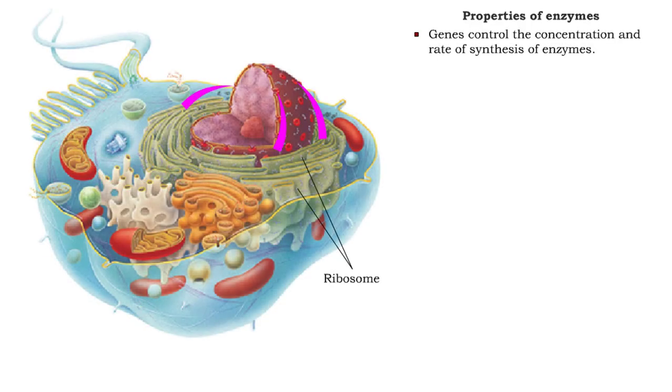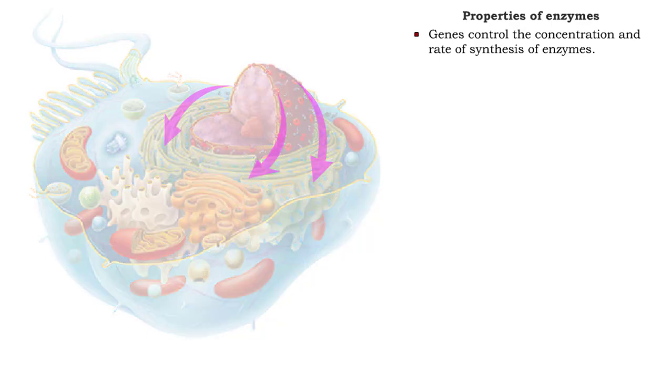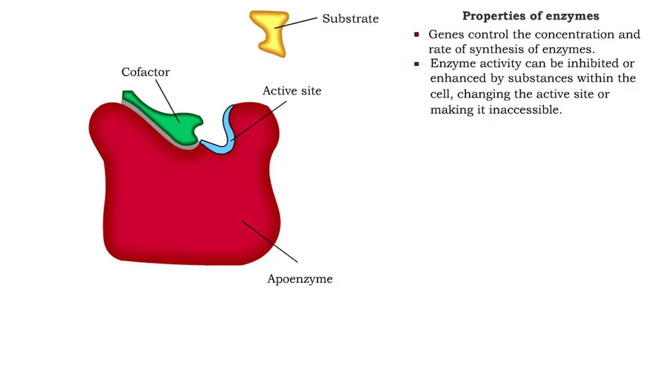The third important property of enzymes is that they can be controlled in several ways. Activity can be affected by the genes, which determine the concentration and rate of synthesis of all proteins. Enzymes can be inhibited or enhanced by substances within the cell. The cofactor is often involved in this process. In this example, the active site is inaccessible due to the presence of the inhibitor.